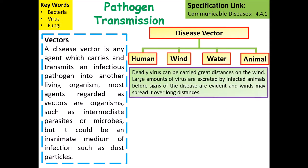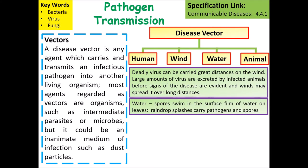Deadly viruses can be carried great distances on the wind. Large amounts of virus are excreted by infected animals before signs of disease are evident, and winds can spread this over a long distance. Water-borne transmission occurs when spores of bacteria, fungi or other pathogens collect on the surface film of water, and are passed between organisms when they drink the water or contaminated water is splashed onto them.